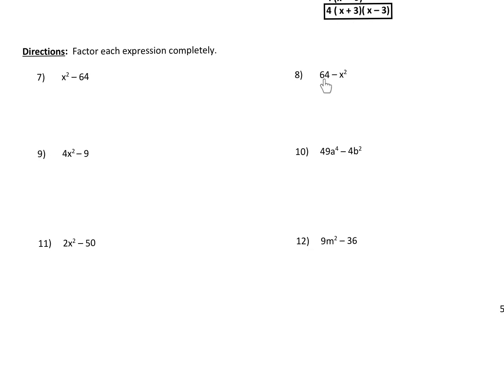Number 8. Remember, the first thing we ask is: can I factor out a greatest common factor? There's nothing you could factor out of each of these two terms. So then you look and say, I have a difference, and both of these are perfect squares. So I'm going to factor this using DOTS — a difference of two squares. Set up two sets of parentheses, make one addition and one subtraction. Take the square root of the first term, which is 8, and put it in the first spot in each parenthesis.